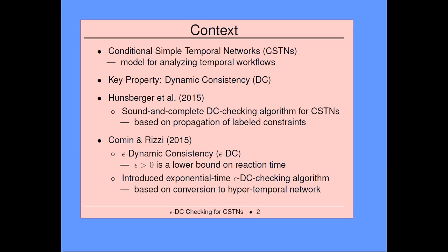Last year, we introduced a sound and complete DC checking algorithm for CSTNs based on the propagation of labeled constraints, and although it's exponential time, it tends to run well in practice. At the same conference, Komen and Rizzi introduced the concept of epsilon dynamic consistency, where epsilon greater than zero is a lower bound on reaction time. So if you make an observation, you can't make a decision based on that observation before time epsilon has elapsed. They also introduced an exponential time epsilon-DC checking algorithm based on conversion to a hyper-temporal network, and although they hadn't implemented it yet, I believe they may have implemented it at this point.